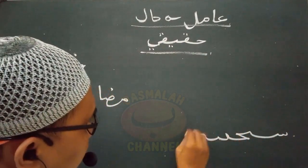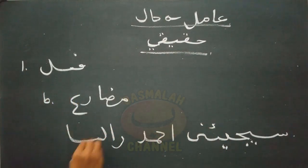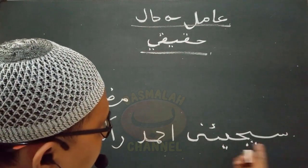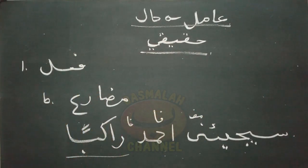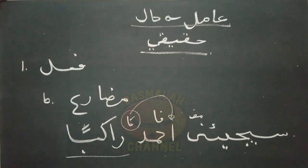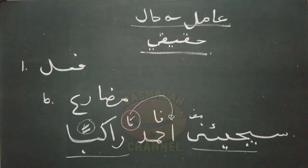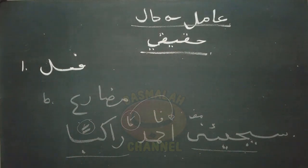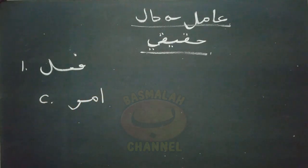Selanjutnya ada pula yang berbentuk fi'il mudori'. Contohnya 'saya ji'uni ahmadu roqiban' - akan datang kepadaku Ahmad dalam keadaan menaikin kendaraan. Lafat roqiban kedudukannya sebagai hal yang menjelaskan keadaan daripada lafat ahmad, dan ikrobnya wajib dinasokkan. Yang menasokkan adalah amil yang berbentuk fi'il mudori'. Kemudian bentuk fi'il yang ketiga adalah berbentuk fi'il amar.